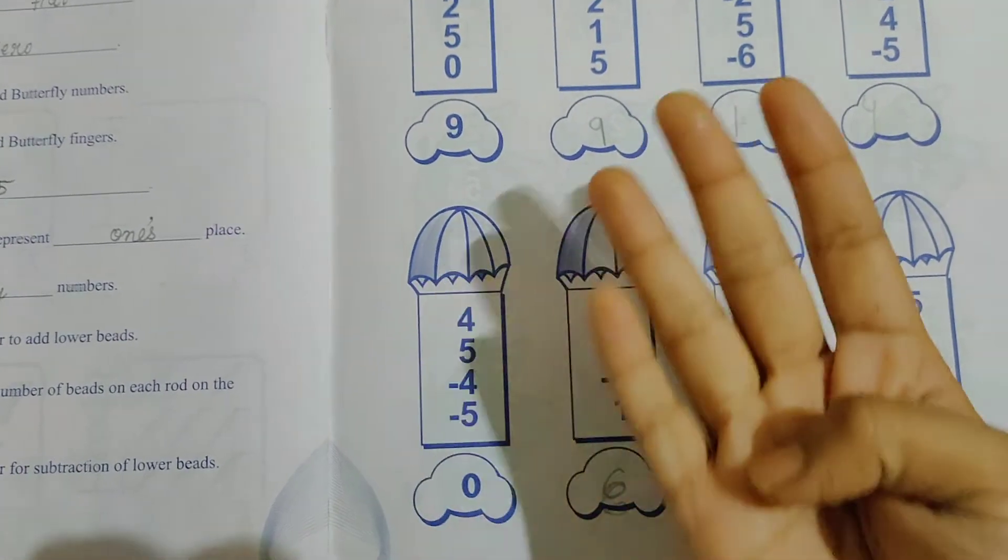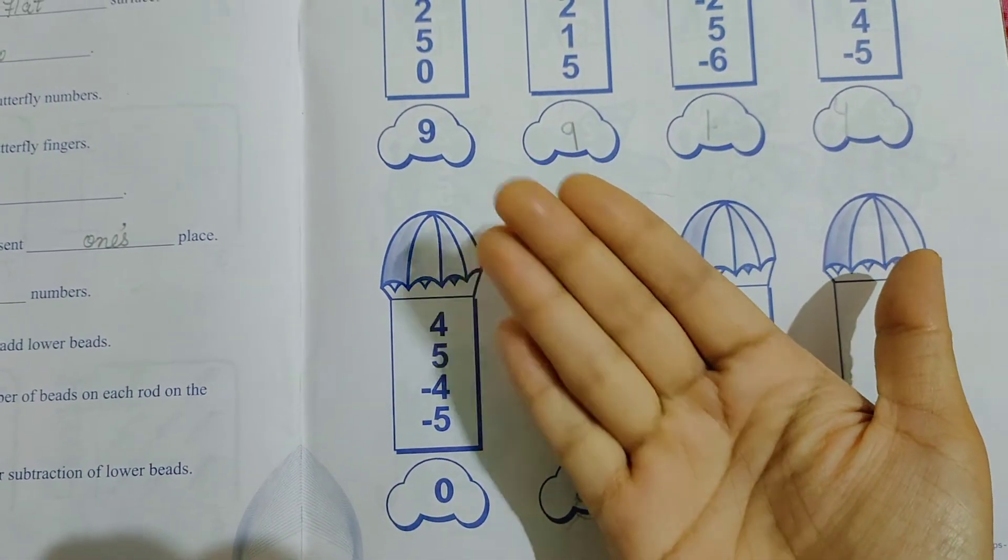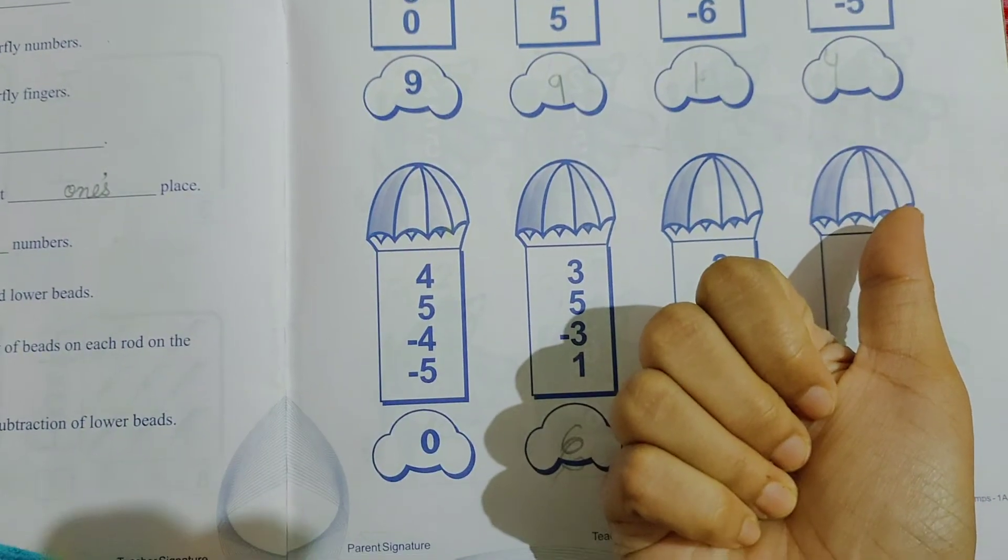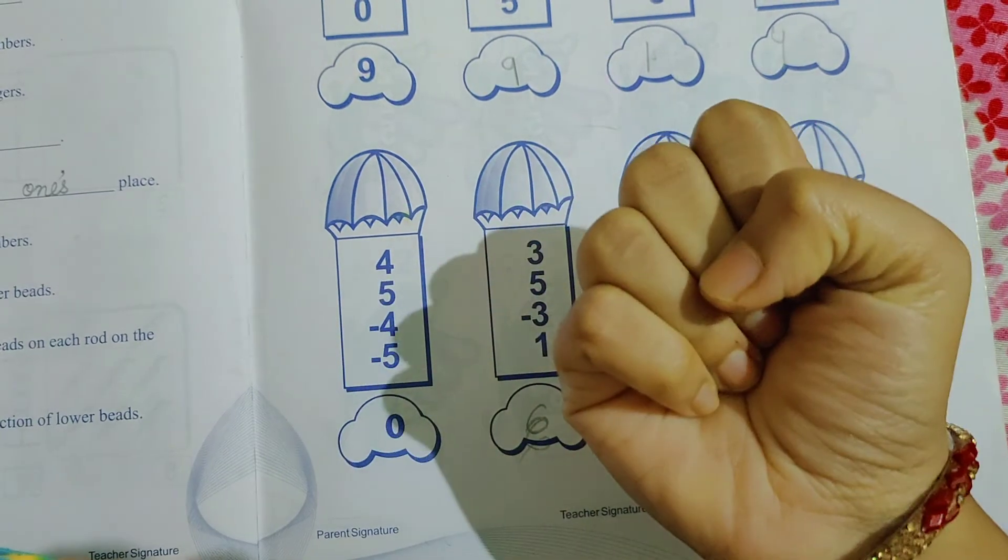See the next question. 4 plus 5 minus 4 minus 5. 5 you have to subtract. Answer is 0.